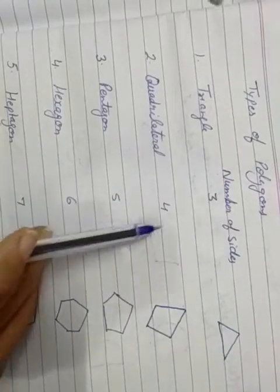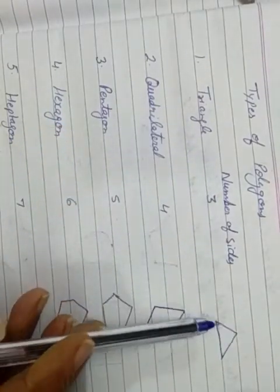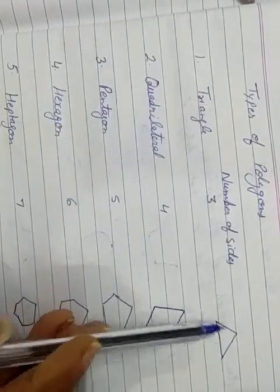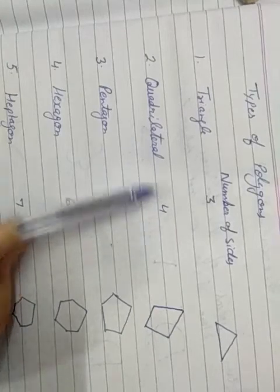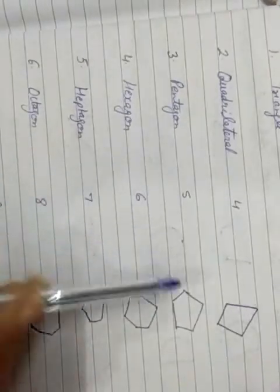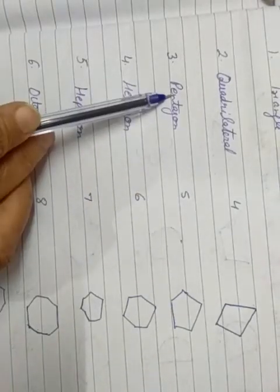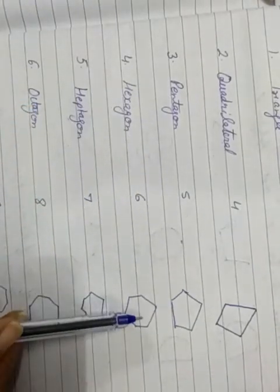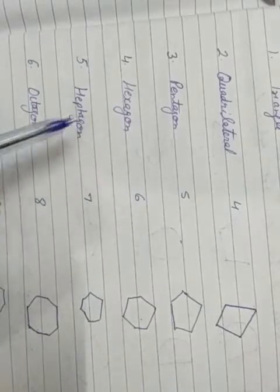Types of polygons: triangle has three sides. If the figure has four sides, the name of the polygon is quadrilateral. If the number of sides is five, the name is pentagon. If the polygon has six sides and is closed, it is called a hexagon.